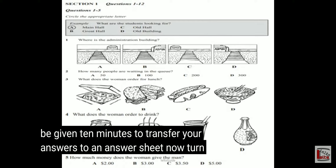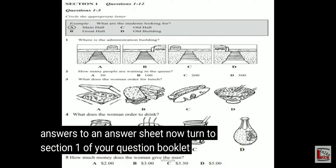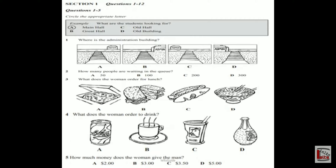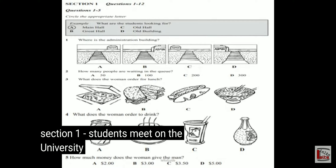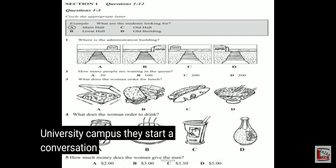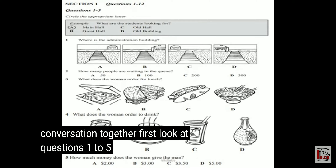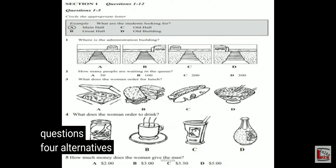Now turn to section one of your question booklet. Section one. Two students meet on the university campus. They start a conversation together. First, look at questions one to five. For each of the questions, four alternatives are given.